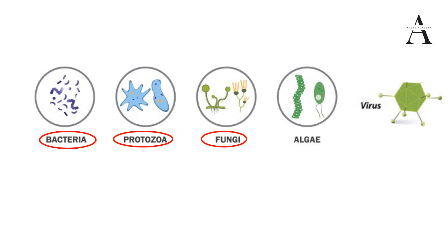When we use yeast and prepare the dough, the yeast feeds on the sugar or glucose element of the dough. By feeding on that glucose component, they produce carbon dioxide. Because of that carbon dioxide, our bread or dough becomes very soft. That's why we use yeast.